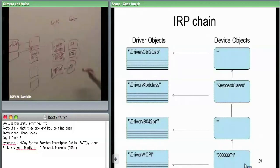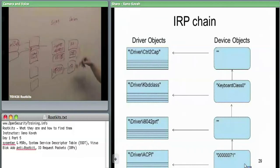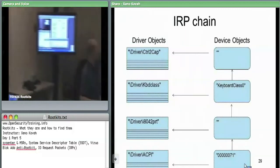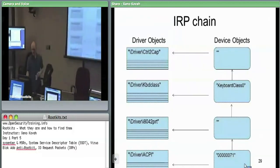For detection, knowing who should be in these IRP chains is important to identify unauthorized filter drivers like Stuxnet. There's a second way to man-in-the-middle this data — pertaining to the array of function pointers within driver objects — to be discussed after the break. Five minutes.